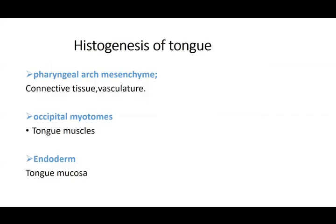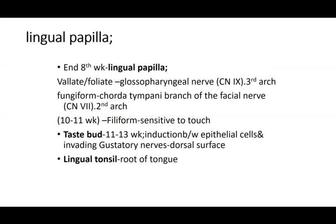To summarize: we've talked about the broad body — the bulk of the tongue; the connective tissue portion; the mucous membrane; and the muscles. Collectively, this is histogenesis. The pharyngeal arch mesenchyme gives rise to connective tissue and vasculature; occipital myotomes give rise to tongue muscles; the endoderm gives rise to mucosa. The lingual papillae develop on the surface of the tongue, which you will have studied by now.